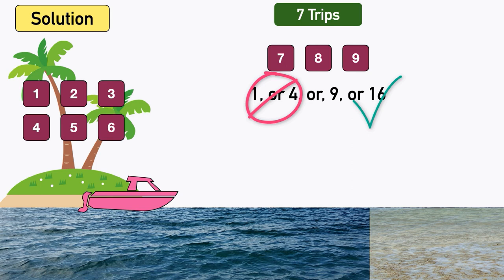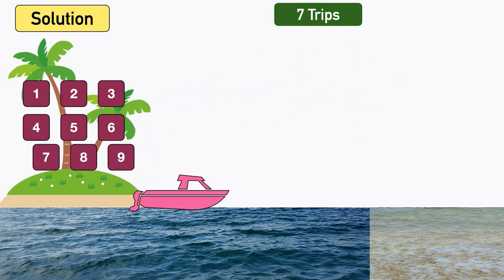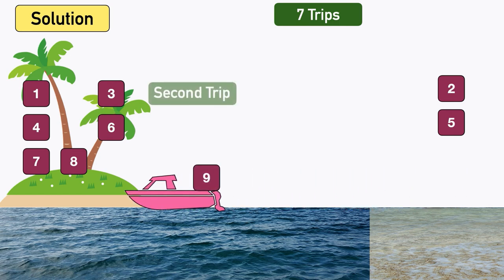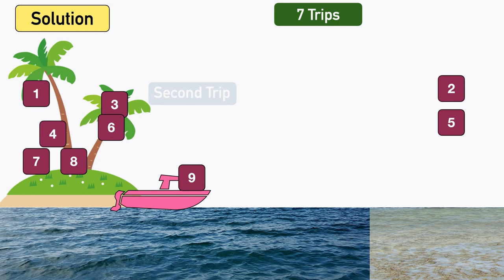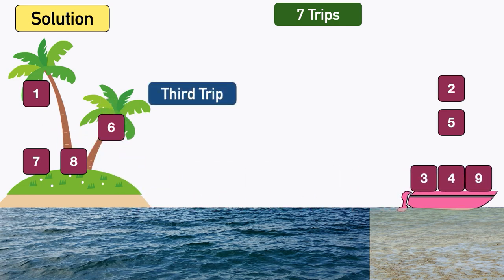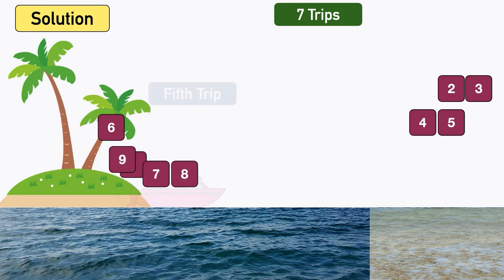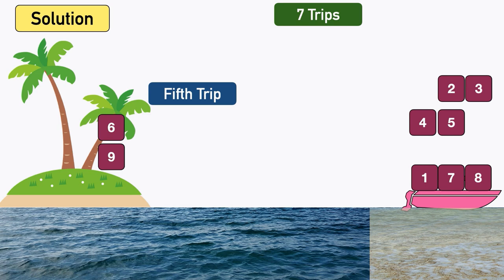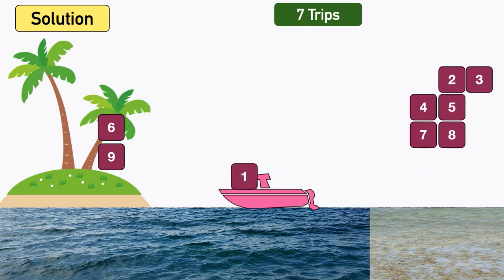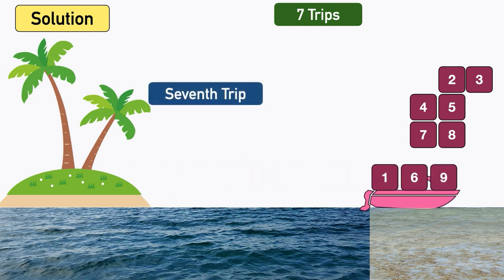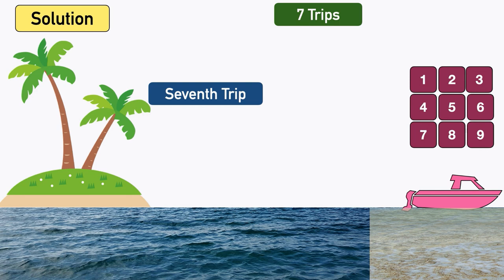In the first trip, send 2, 5, 9 — sum is 16. Bring back 9 (second trip). Third trip: send 3, 4, 9 — sum is 16. Bring back 9 (fourth trip). Fifth trip: send 1, 7, 8 — sum is 16. Bring back 1 (sixth trip). Finally, seventh trip: send 1, 6, 9 — sum is 16. Numbers 1 to 9 have all crossed the river in only seven trips. There can be other patterns which can be solutions — share your pattern in the comments.